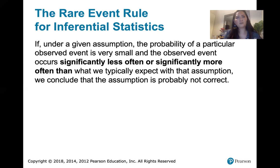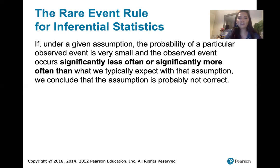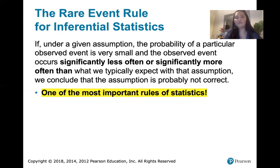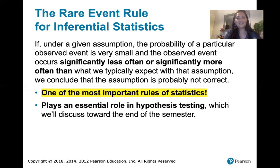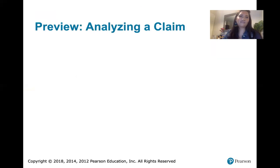Then we would say that the assumption must be incorrect — there must be something wrong with what we assumed at the very beginning, because the probability was supposed to be small and yet this event is occurring much more or much less often than we would expect. This is the rare event rule; it's one of the most important rules of statistics and plays an essential role in hypothesis testing, which we'll discuss more toward the end of the semester.